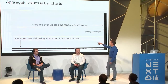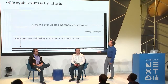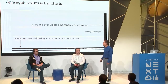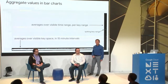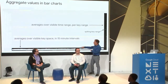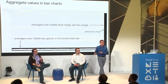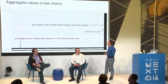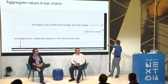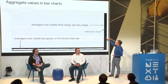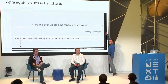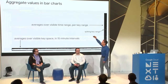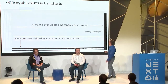Around the heat map, at the bottom and on the right, you'll see aggregate values in bar charts. At the bottom you see averages over the visible key space in 15-minute intervals — pretty much what you'd see in a traditional line chart. On the right side, another bar chart shows you averages over the visible time range per key range. That spike corresponds to that bright white line of the hot key in the middle.